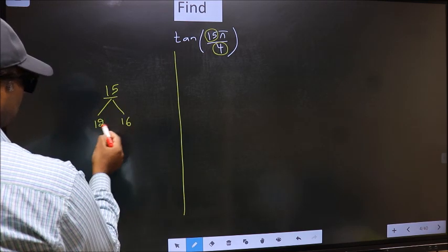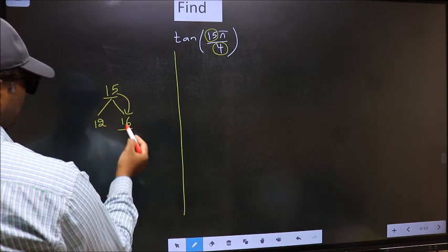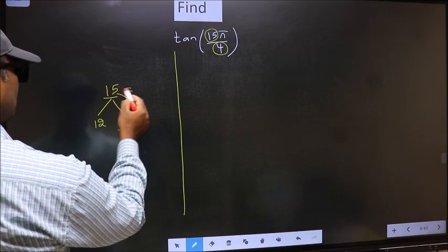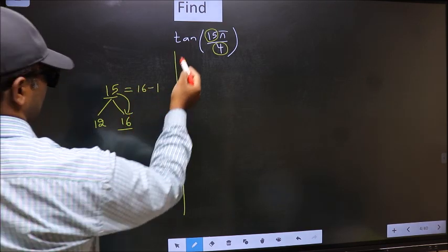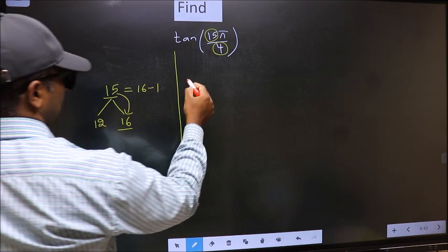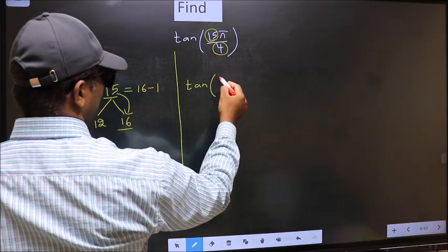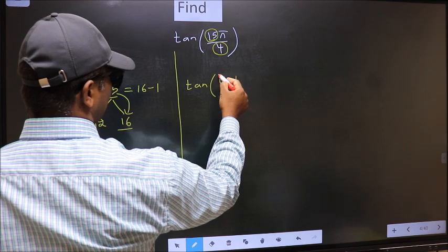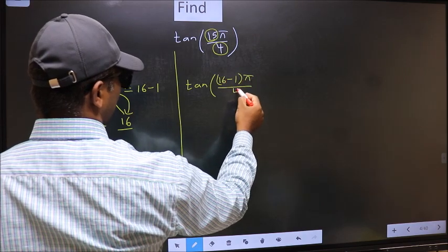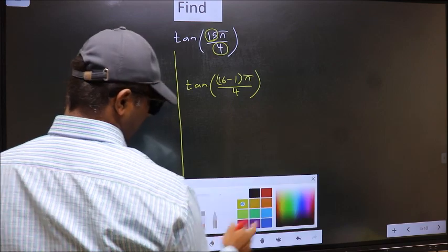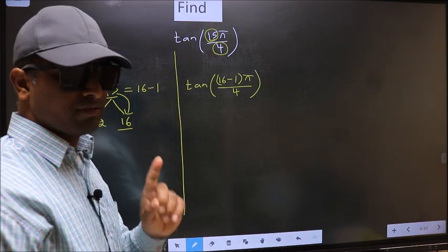Now, 15 is close to which number? This is close to 16. So now 15 should be written as 16 minus 1. This will become tan — in place of 15, we should write 16 minus 1, giving us tan((16 - 1)π/4). This is your Step 1.